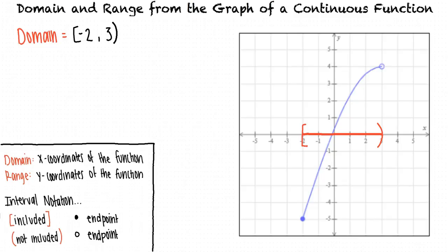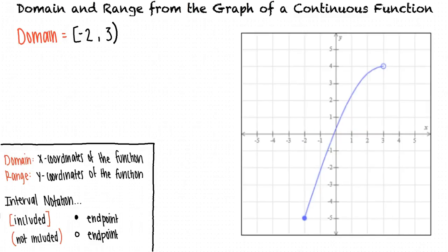Now let's determine the range. Since range deals with y-values, which corresponds to the y-axis, we examine the graph from bottom to top. The bottom-most y-coordinate is negative 5, and the endpoint is a filled-in circle, so we'll use a bracket to indicate the smallest value in our range. The topmost y-coordinate is 4; however, this endpoint is an open circle. This means that the y-coordinate 4 is not actually included in the range, but the y-coordinates get infinitely close to 4 without ever being 4.